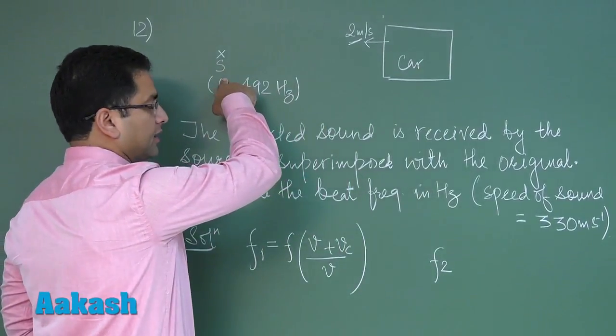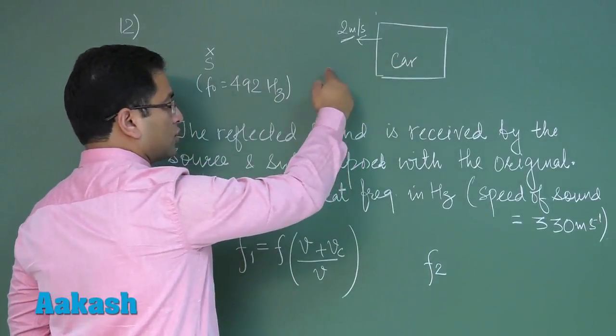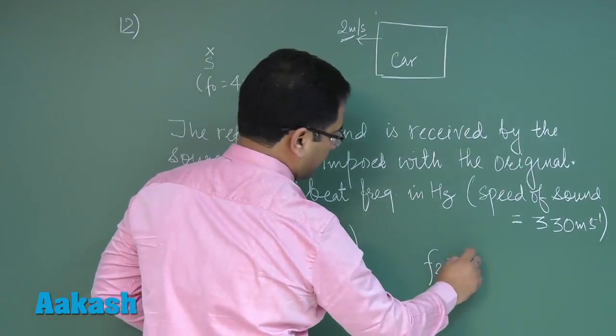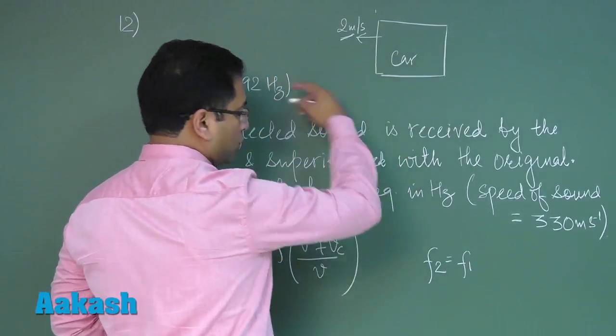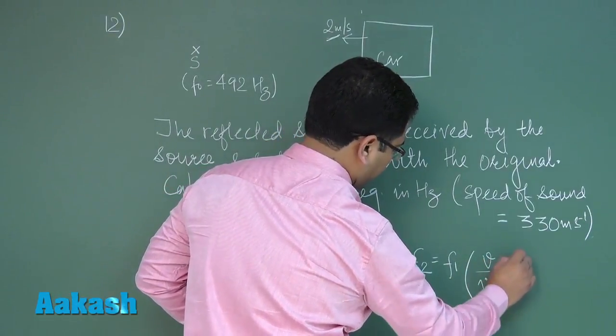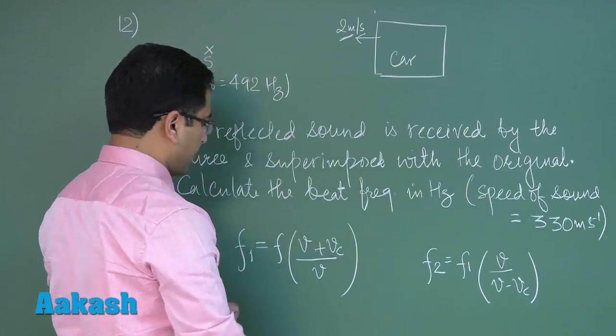That would be F1. The source is moving, so that would be V upon V minus Vc. Now let me put the value of F1 here, so that will be F(V + Vc)/(V - Vc). It's a simple